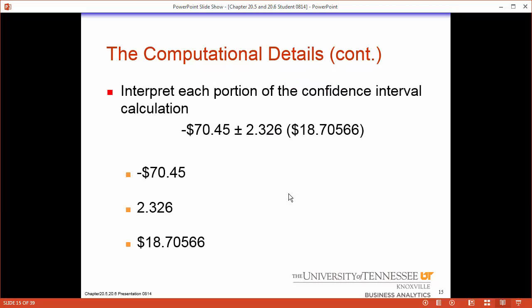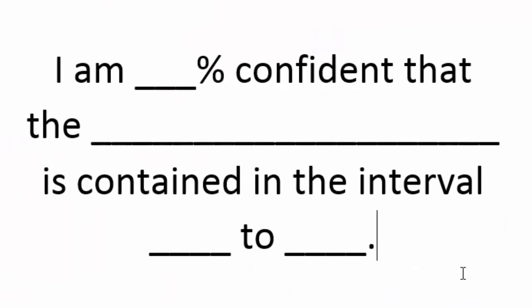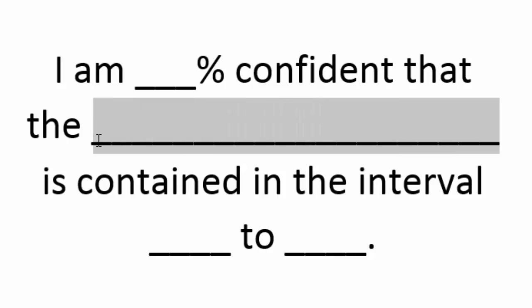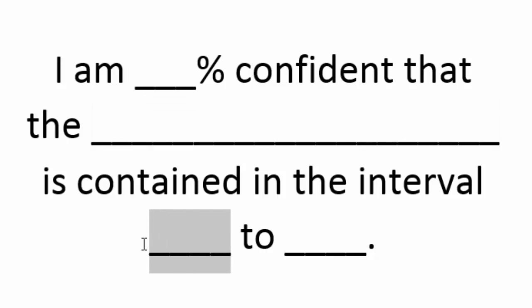Interpreting this interval is very important — the interpretation needs to be precise. The template is: I am blank percent confident that the blank is contained in the interval blank to blank. The first part is how confident you are, depending on what z or t you pick. The next part is what you're trying to estimate — the true parameter. Finally, name your interval blank to blank, which would be the difference in dollars, and you can add the addendum about your friend giving you more. All confidence interval interpretations should follow this format.